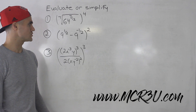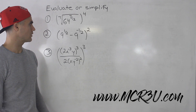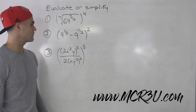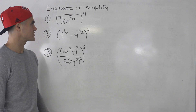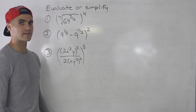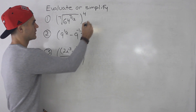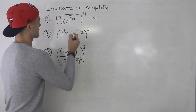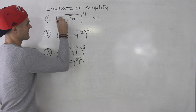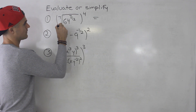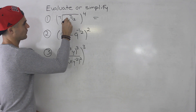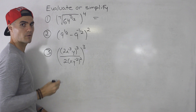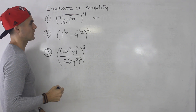Moving on to more expressions to either evaluate or simplify on the test. So number one, we've got a fairly complex one here. We've got the seventh root of 64 to the power of 7 over 12, and that's all to the power of 4.